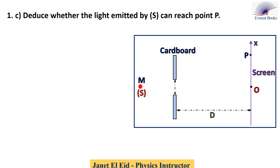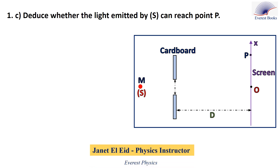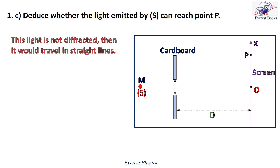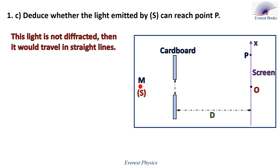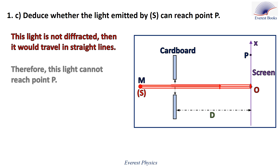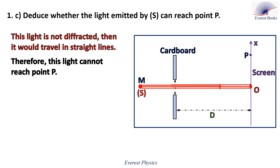Part 1C: deduce whether the light emitted by S can reach point B. As we have seen, this light is not diffracted, so it travels in straight lines. Looking at the figure, this light does not pass through point B — it cannot reach point B.